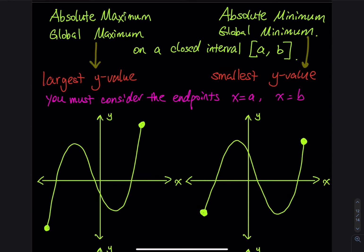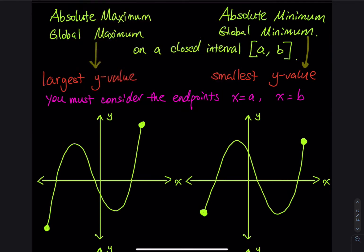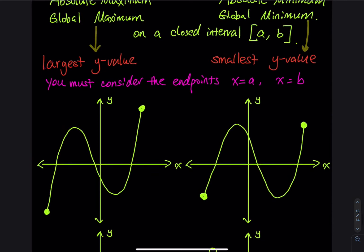We have a couple of graphs right here. For the first graph we have a closed interval, so I am using two solid points, one on the left and one on the right — no arrows. The absolute minimum is the lowest y value, right here. And the highest y, right here, is the absolute maximum.